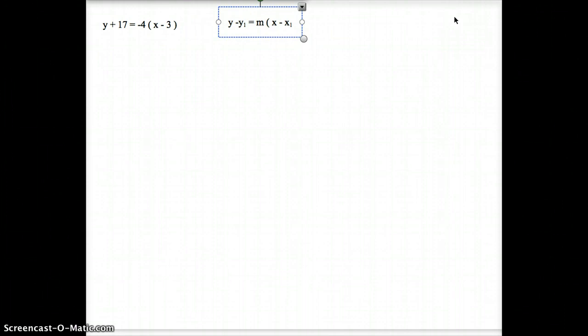Right about now you might be asking yourself, what the heck is this sub 1 stuff? That seems so confusing. Let me explain that to you. Here's what the sub 1 stuff is. Let's say, for example, that I have points 3 and negative 17.